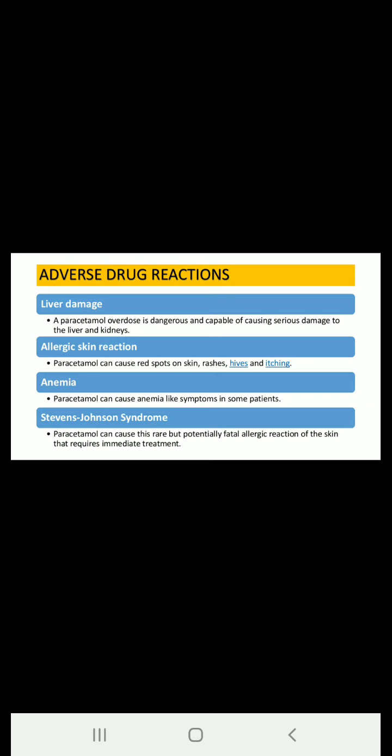Now we will see adverse drug reactions. No particular severe side effect is associated with paracetamol, but if we administer more than 500 milligrams at a single time, we can feel side effects. The first adverse drug reaction is liver damage: a paracetamol overdose is dangerous and capable of causing serious damage to the liver and kidneys, as these are the metabolic organs.